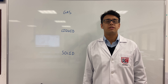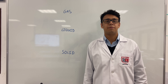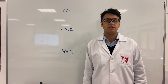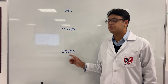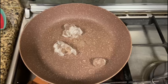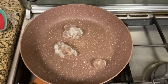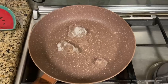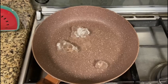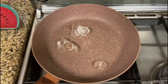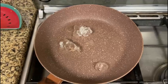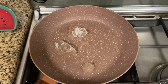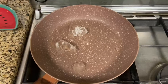When certain substances gain or lose a specific amount of energy, they have the ability to change state. First, we'll be showing you solids to and from liquids. Melting is when a solid changes to a liquid — the common example is when ice changes to water. Ice turns to water when it has a sufficient amount of energy to do so, which naturally occurs at the melting point of zero degrees Celsius.